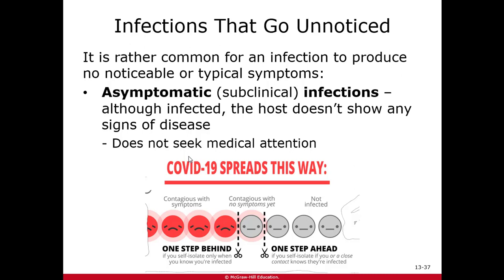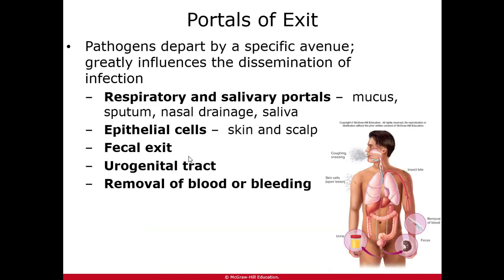Organisms can also get out of the body in many of the same ways they got in: the respiratory tract, salivary glands — viruses commonly end up there, which is why many things spread through saliva and kissing — epithelial cells, feces which has lots of organisms, the reproductive tract, the urinary tract, and blood. Bleeding can also be a portal of exit. There are lots of different ways organisms can leave the body and become infectious agents for something else.